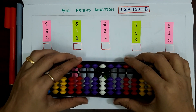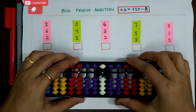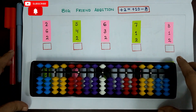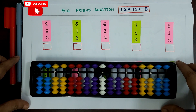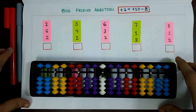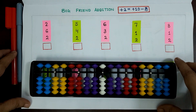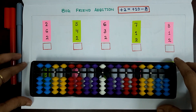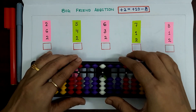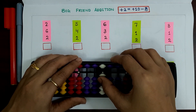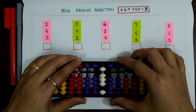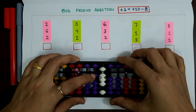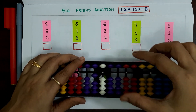Now my Abacus tool is ready for the calculation. As you can see, no bits are touching the answering bar, so now the answer on my tool is 0. Now we can start our calculation. First example here is 2 plus 6 plus 2. 2 plus 6 plus 2: apply plus 10 minus 8. Answer is 11.